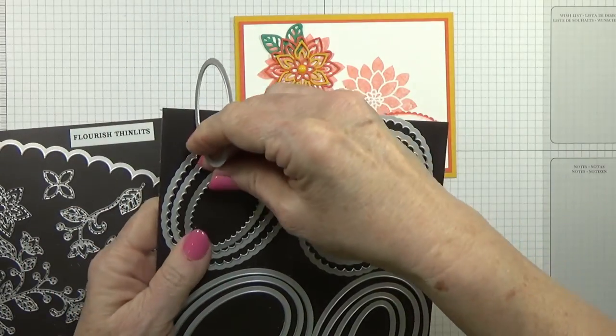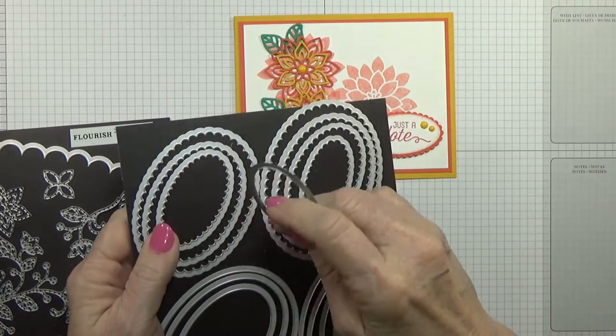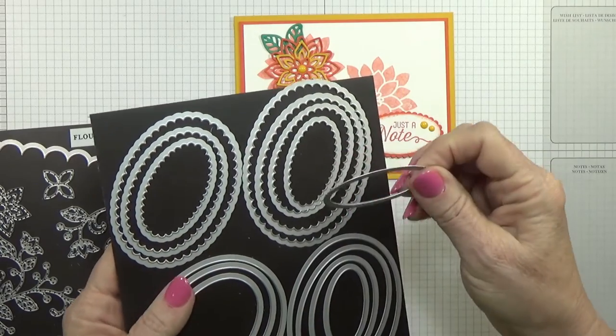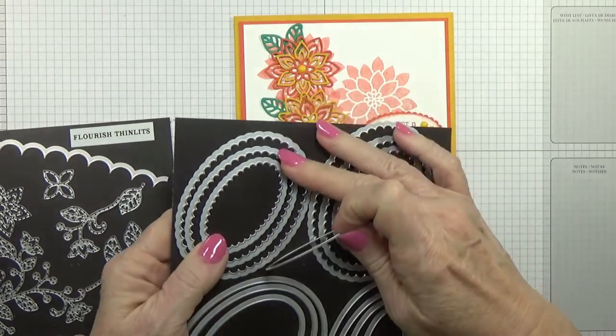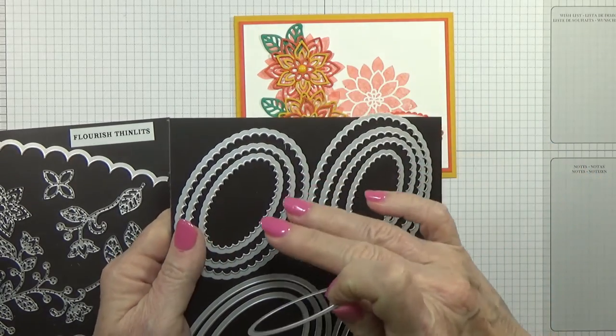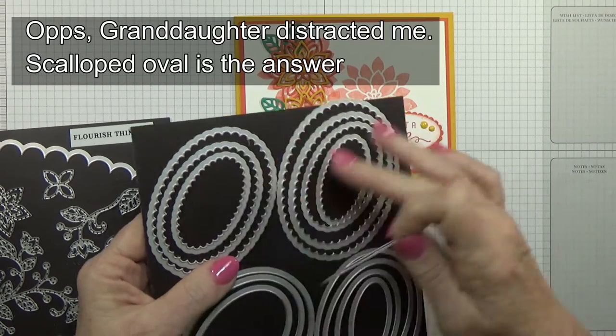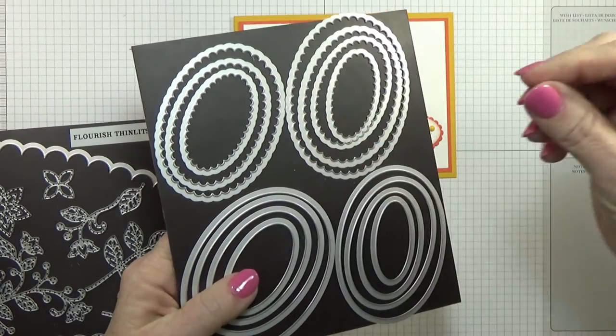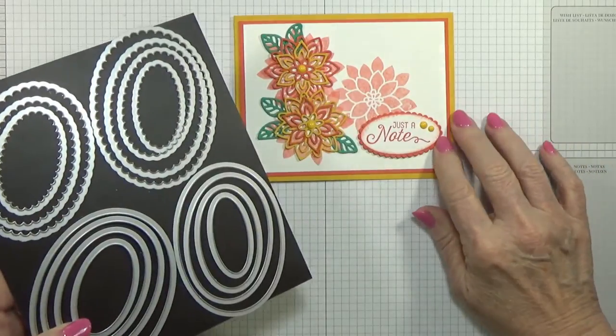This one is the next to the smallest of the... hang on just a second... It's the next to the smallest of the scalloped ovals, and then this is next to the smallest of the straight ovals. That's for the white whisper white and this is for the color part right here.